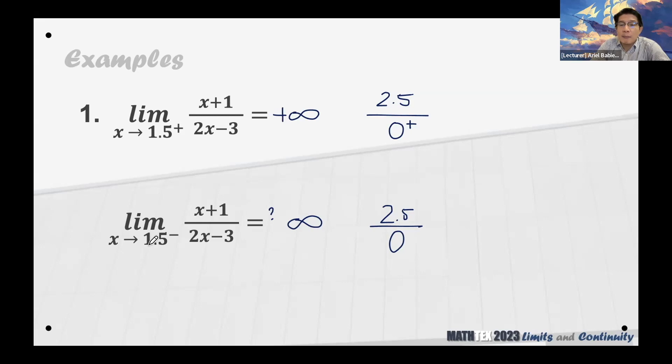From the left naman tayo. From the left of 1.5, we are looking at values that are less than 1.5. If you multiply less than 1.5 by 2, it will be less than 3. Less than 3 minus 3 will be through negative values. So the denominator approaches 0 from the negative.